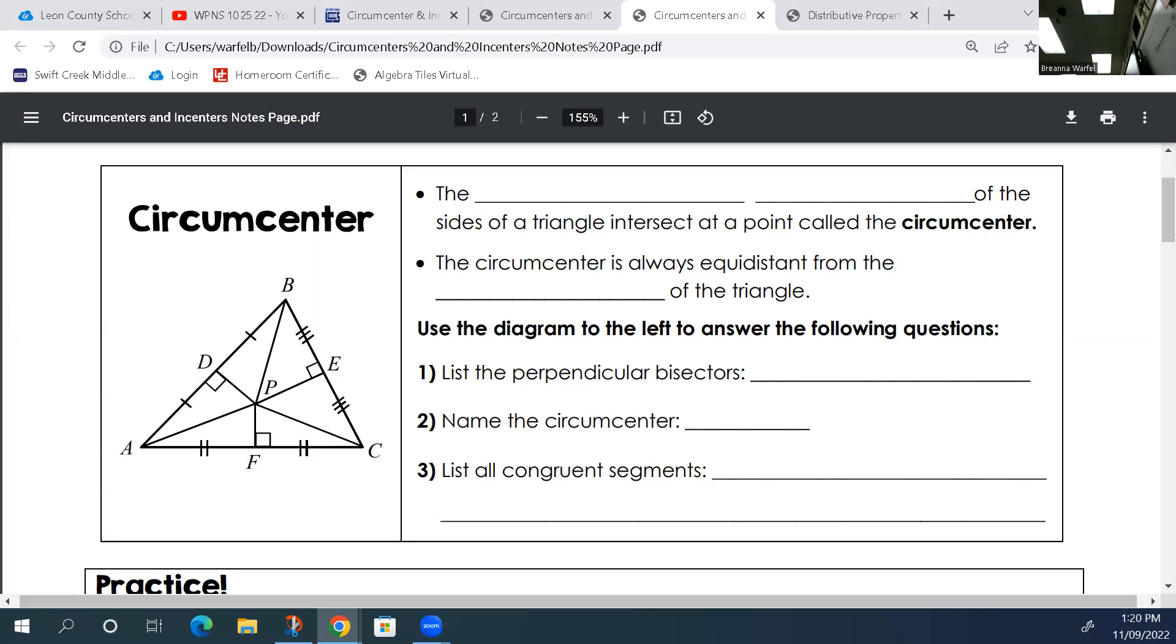It tells you to list all of the congruent segments. The first thing is AP is congruent to BP, which is congruent to CP. They're telling you that the segments from the vertices to the circumcenter point, all of these sides are congruent. All of those red lines are congruent. That is really important.